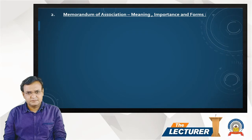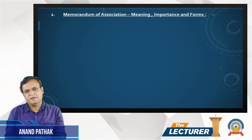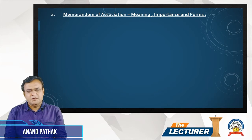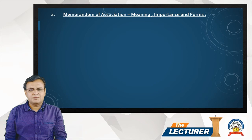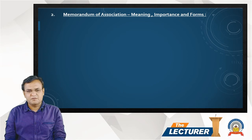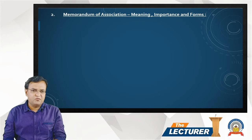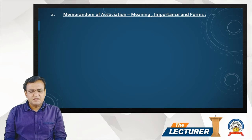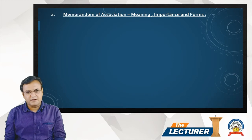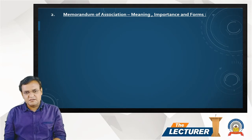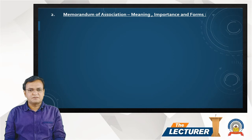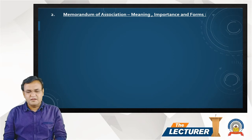Welcome friends. In the previous session we discussed the procedure for incorporation of a company, including the documents required to be submitted for incorporation. The main documents required are the memorandum of association and articles of association. Today's topic for discussion is the memorandum of association.